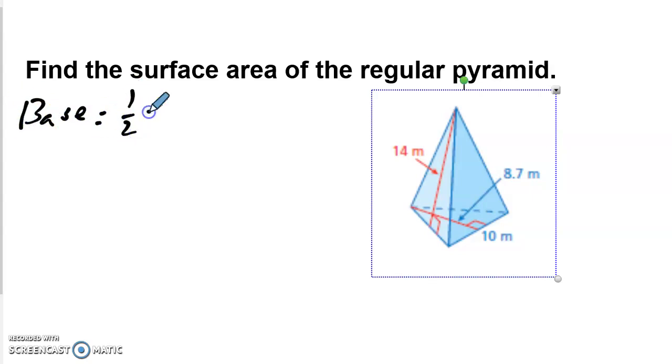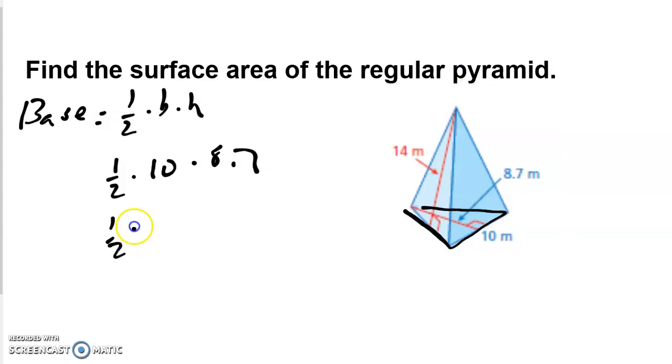It's going to be the same thing, 1/2 times the base times the height. You're going to end up having an area that is 1/2 multiplied by 10 is your base, and 8.7 is going to be height on the bottom here, right there. So if we do 1/2 multiplied by 10 multiplied by 8.7, you're going to end up with 1/2 of 87, which ends up as 43.5 meters squared.